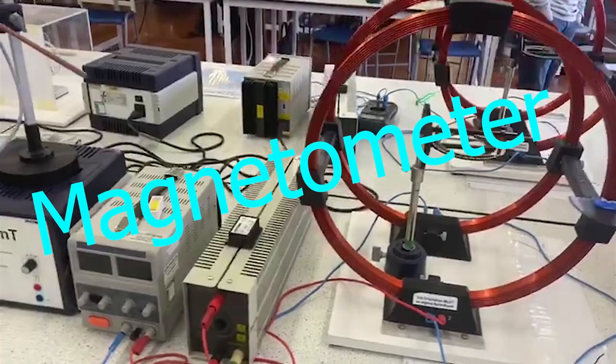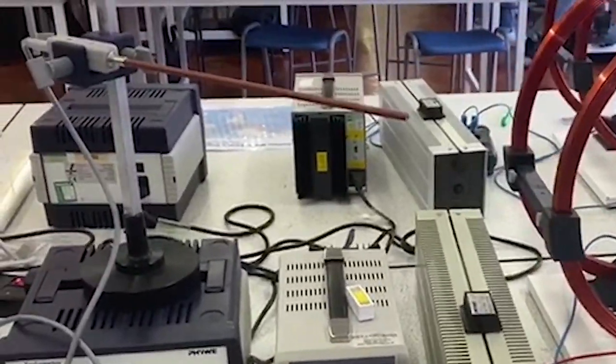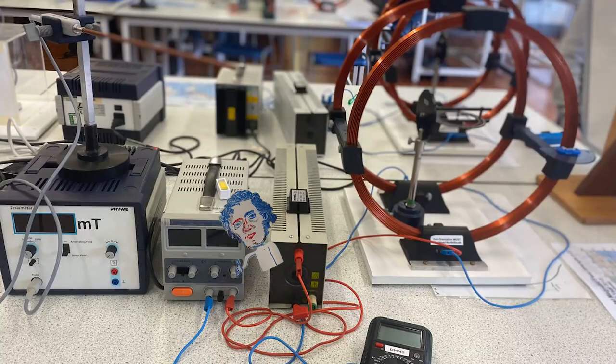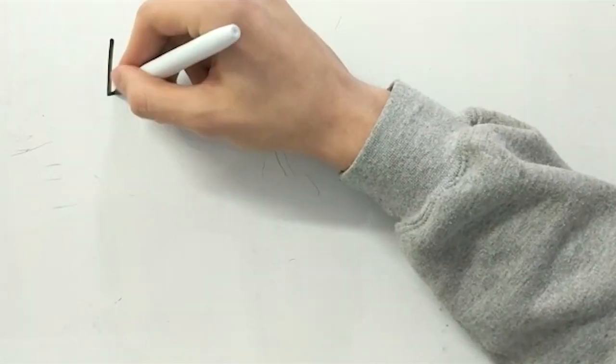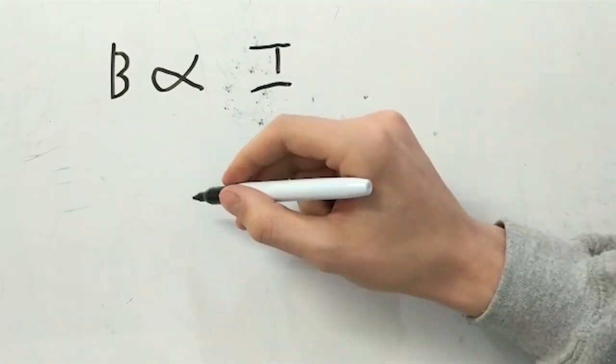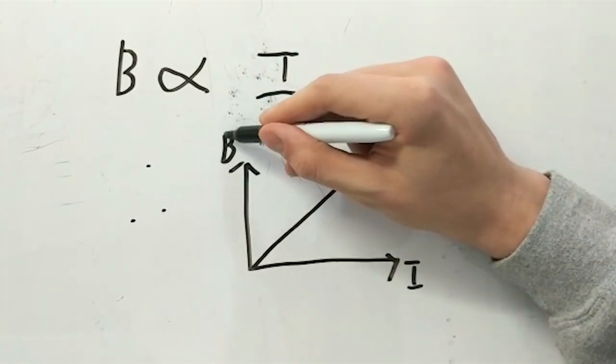We used a magnetometer to measure the change in magnetic field B. By changing the current that flows in the coils, we'll change the induced magnetic field. Magnetic field is proportional to current, so by plotting B against I and taking the gradient, we'll get a constant k.